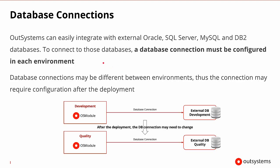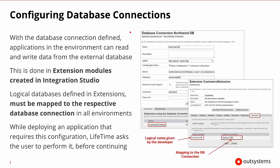Last but not least, we have database connections. OutSystems allows us to easily integrate with external databases like Oracle, SQL Server, MySQL, DB2, etc. To connect to these databases, we need a database connection, and that will need to be configured in each environment. Very similar to web references, as we move to different environments we may have different connections — in development we may connect to an external development database, and in quality we may connect to the external quality database. To configure these database connections, we go to Service Center to make changes there.